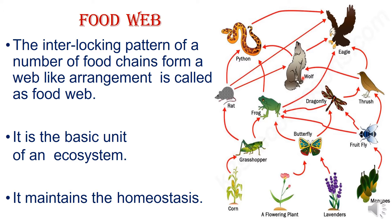If you look at a food web, the grasshopper is eaten by the rat. The rat is eaten by the python, which is then eaten by the eagle. This is an example of a number of food chains within a food web.